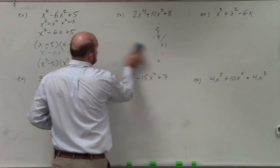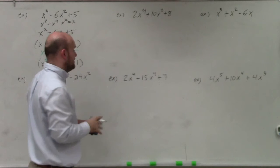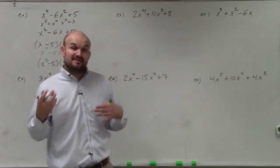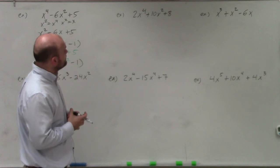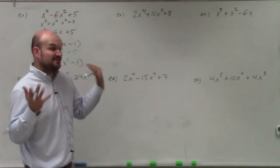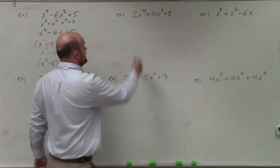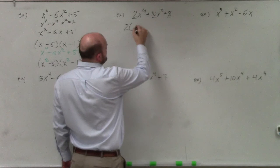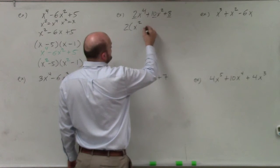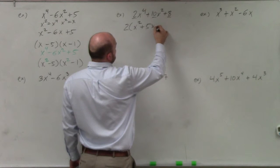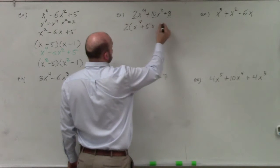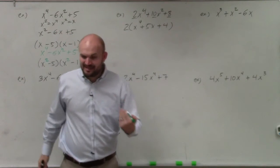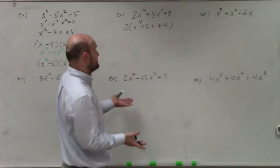Using that same type of thinking for our next problem: the first thing I always want to do is look to factor out a GCF. You can see all of these coefficients and the constant are divisible by 2. So I'm going to factor out a 2, leaving me with 2(x⁴ + 5x² + 4). Again, it's the same exact factoring problem — just squared — but my first two terms, when multiplied, need to give me x⁴, not x².